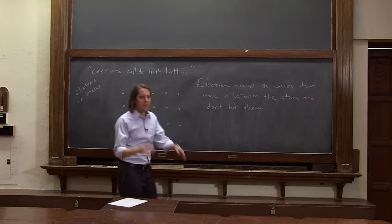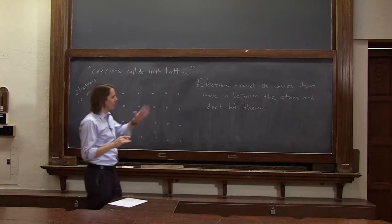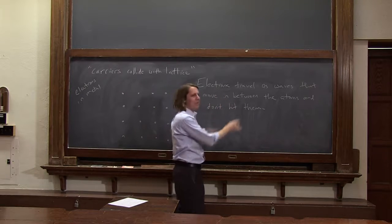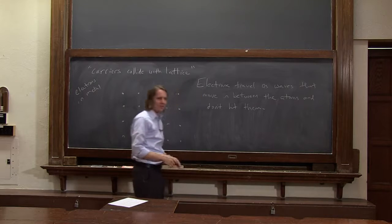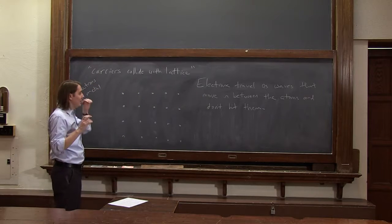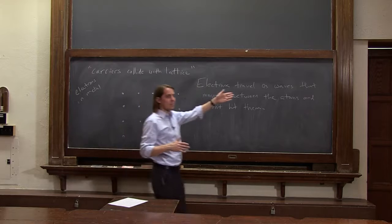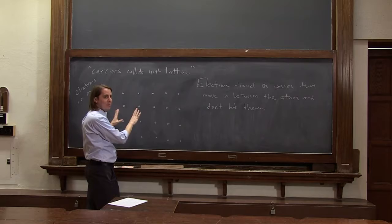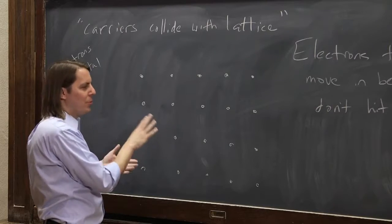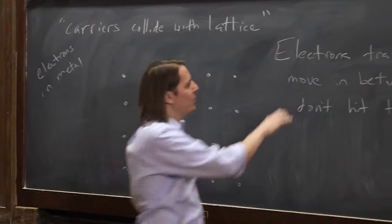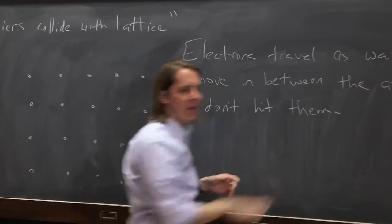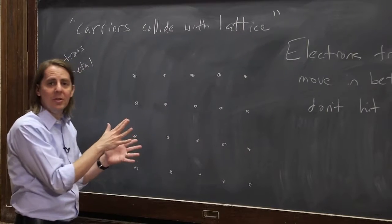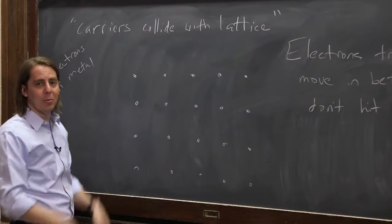A lot of high-level physicists and professors that see this are just completely appalled that I would say that, because this statement is not meant for them. This statement is meant for someone just learning physics. So if you do the quantum mechanics and the solid-state physics, you learn that electrons do travel as waves, and they travel with a wavelength that sort of depends on this periodic potential created by the atoms. You can't really think of them as billiard balls. They're kind of like waves, and they're kind of like billiard balls. In this ideal case, all metals would be superconductors.